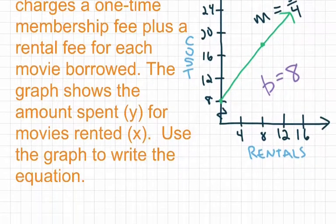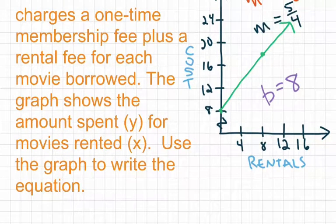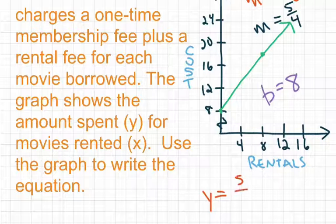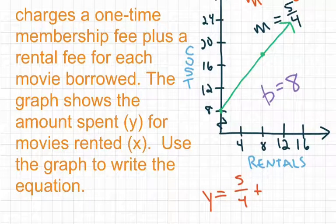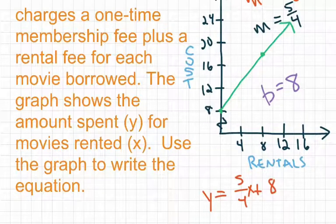Now we're going to write our equation. We have our slope, 5 over 4, and our y-intercept, 8. So our equation is y equals 5 fourths x plus 8. And that is our equation for this graph.